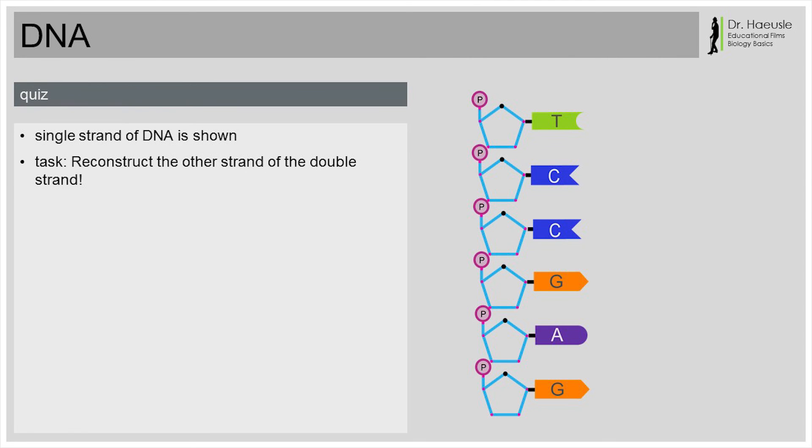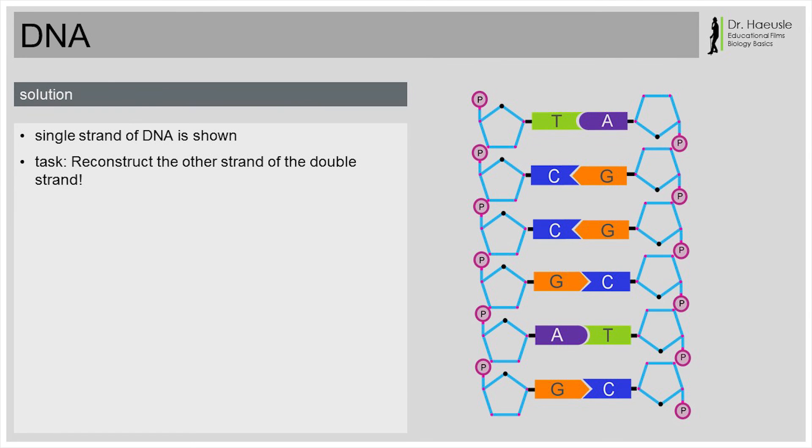Here's a little quiz. I'll show you one strand of DNA, and you'll tell me what the second strand looks like. The base sequence of this strand is T, C, C, G, A, G. Then the base sequence of the opposite strand is A, G, G, C, T, C. Correct. You were able to reconstruct the second strand based on the first strand. The second strand is complementary to the first strand because its nucleotide sequence is complementary.